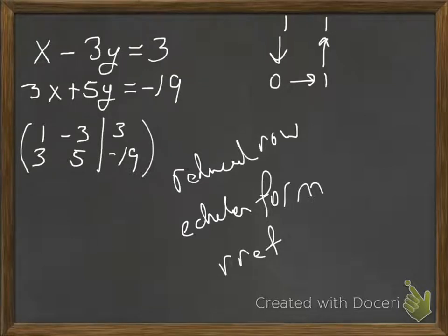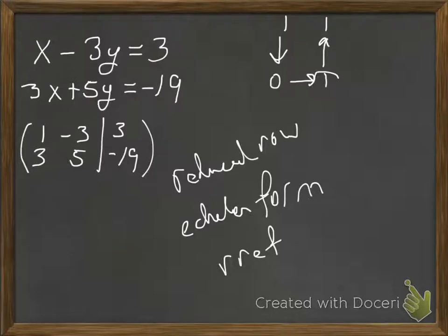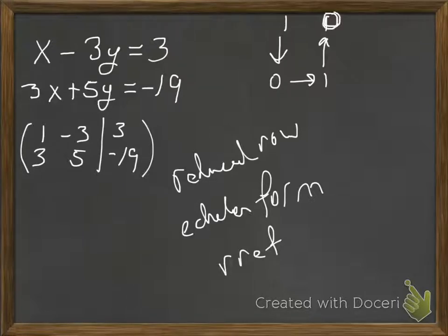The procedure is: we make the first row, first column a 1, and then everyone else in that column zeros. Then we go to the second column, make that position a 1, and make everyone else a 0. That should be a 0 there — excuse me for the correction.